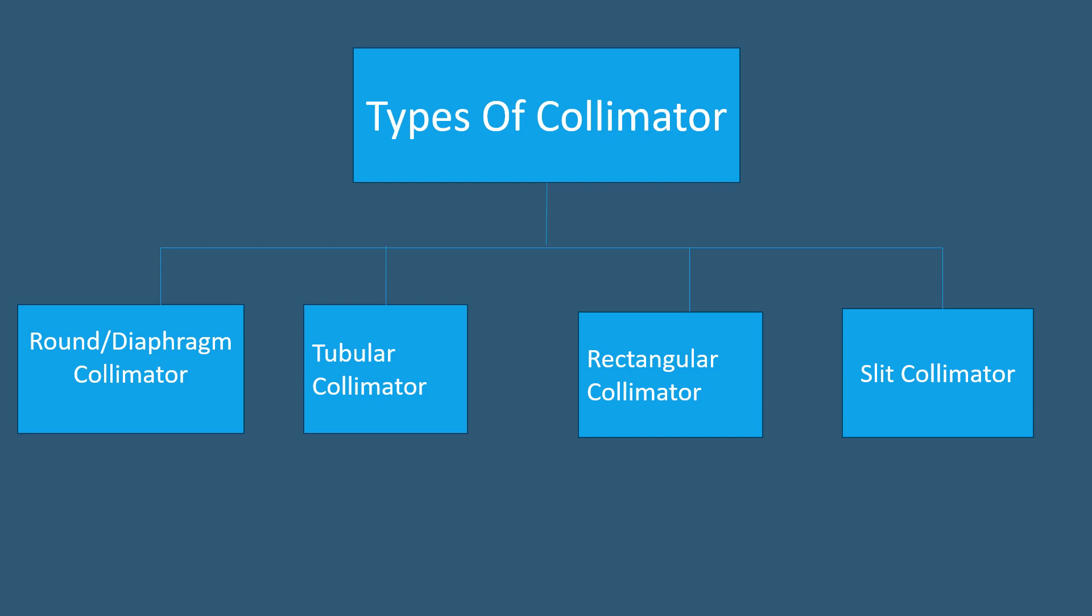Let's have a look at this flow chart. It consists of types of collimator. So the first type is round or diaphragm collimator, tubular collimator, rectangular collimator and slit collimator.